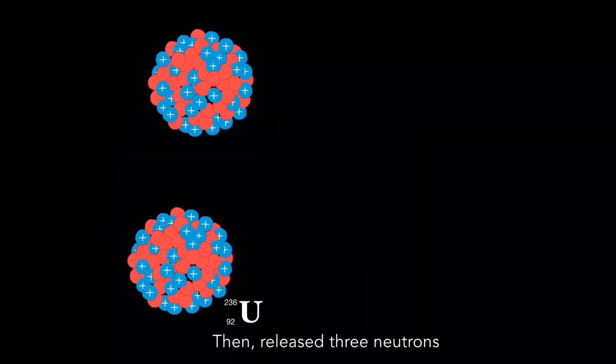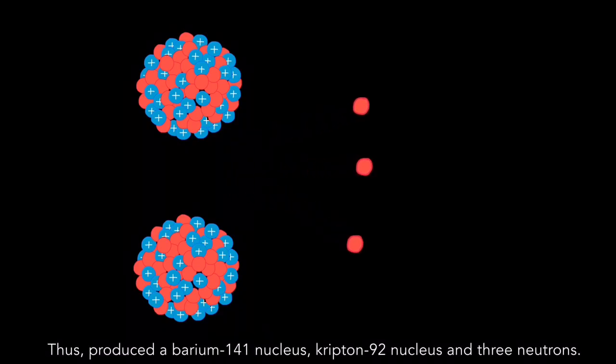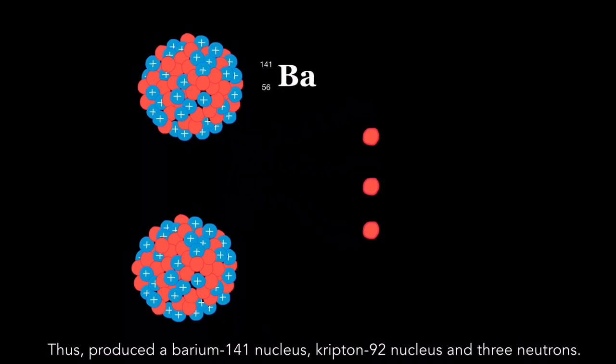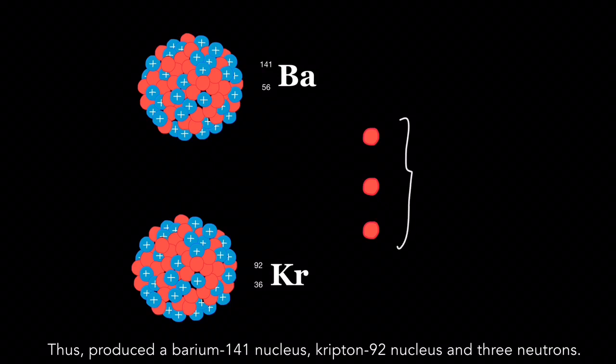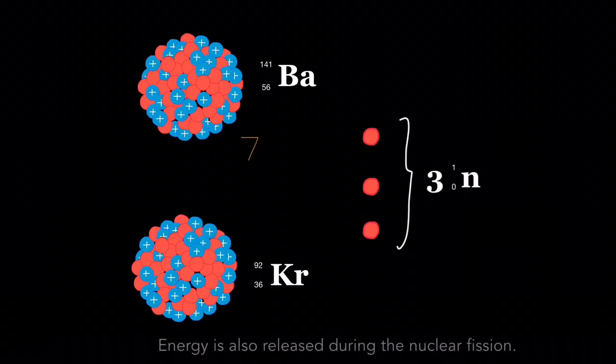Then, three neutrons are released, producing a barium-141 nucleus, krypton-92 nucleus and three neutrons. Energy is also released during the nuclear fission.